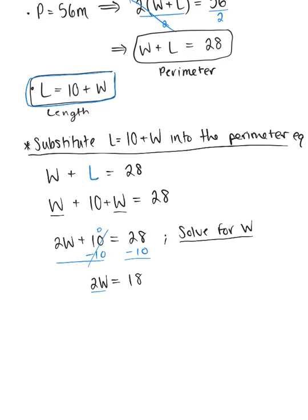Dividing both sides by 2: 2 divided by 2 becomes 1, and W = 18 ÷ 2 = 9. Don't forget the units. The width is 9 meters.